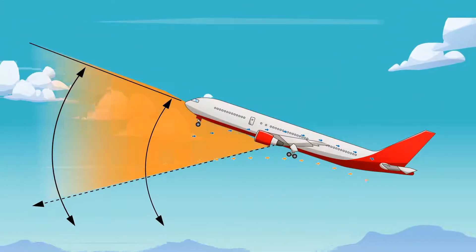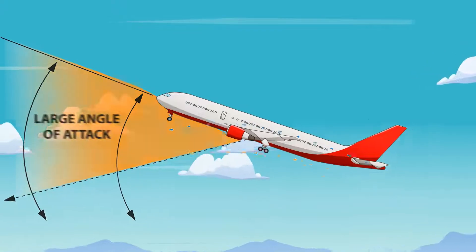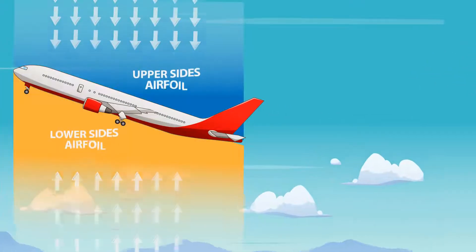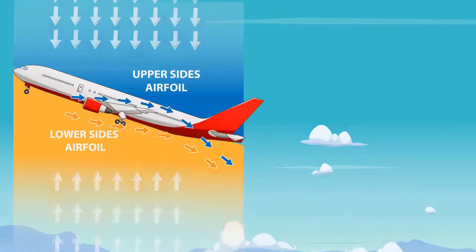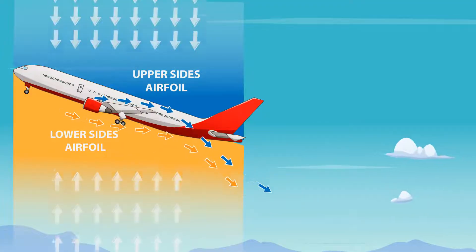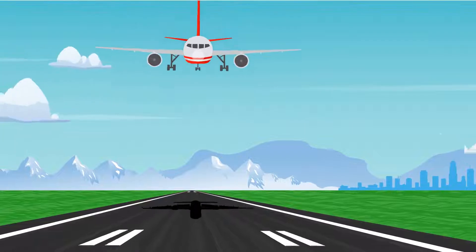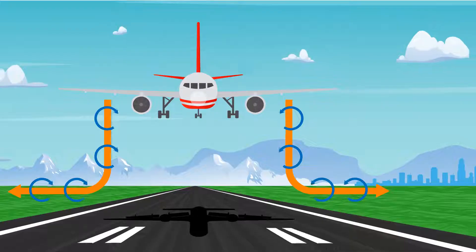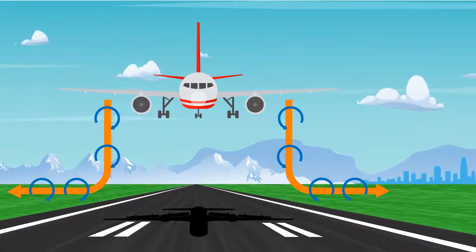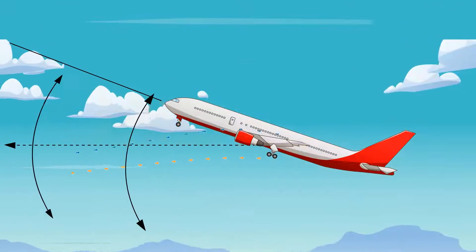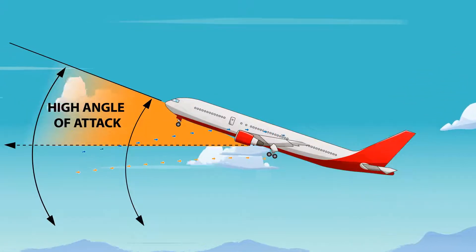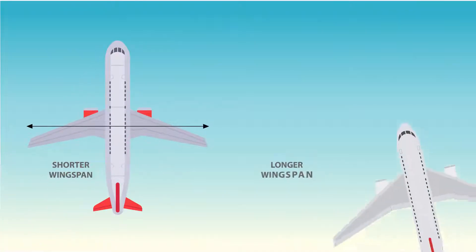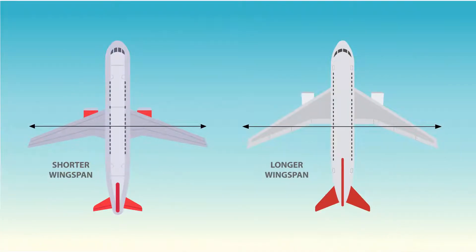With such a large angle of attack, a greater pressure difference is created between the upper and lower sides of the airfoil. This will allow for a greater lateral flow of air, causing stronger vortices. The weight of the aircraft also has an impact on the strength of the vortices. A very heavy aircraft flying at a high angle of attack will generate stronger wingtip vortices. A shorter wingspan, rather than a longer one, generates a greater amount of induced drag, which creates stronger wingtip vortices.